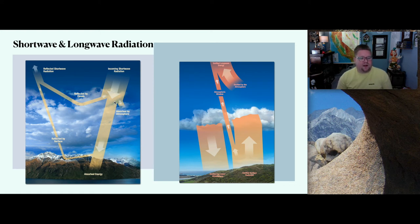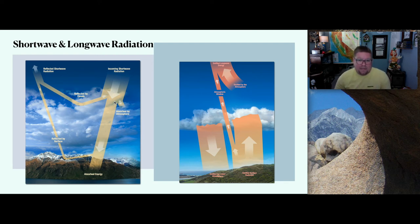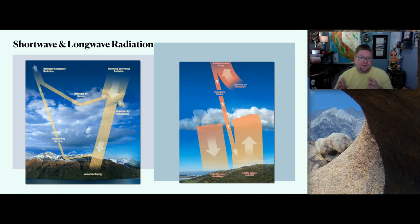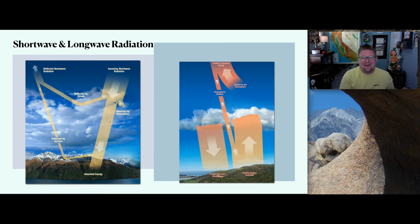So, things that are important: shortwave is visible light; longwave is radiated sensible heat. We've also talked about albedo — the level of whiteness a surface has. The whiter the surface, the higher the albedo and the more reflective it is. The darker the surface, the lower the albedo. White reflects more; darker colors do not.